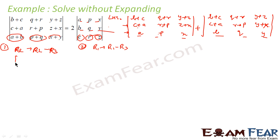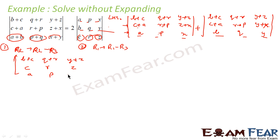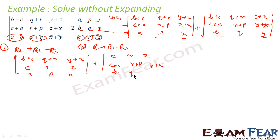So what we get here: for the first determinant, R2 becomes R2 minus R3. R1 is unchanged - so let's write R1 as b plus c, q plus r, y plus z. R2 becomes: c plus a minus a is c, r plus p minus p is r, z plus x minus x is z. And R3 remains unchanged as a, p, x. For the second determinant, applying R1 = R1 minus R3: b plus c minus b is c, q plus r minus q is r, y plus z minus y is z. R2 and R3 are unchanged.